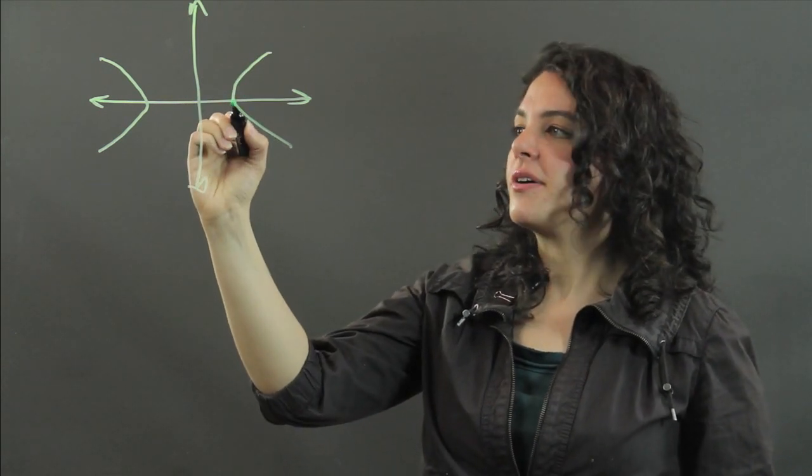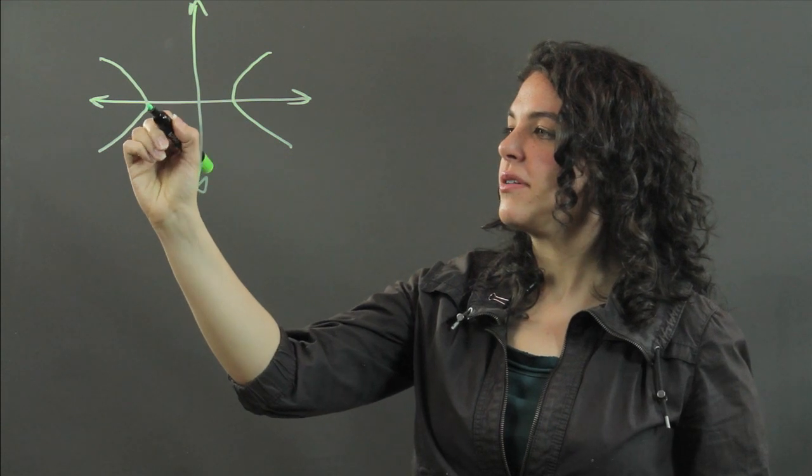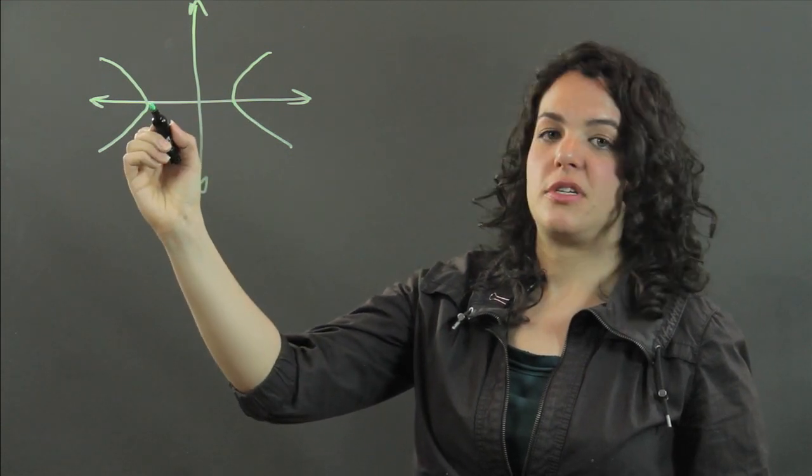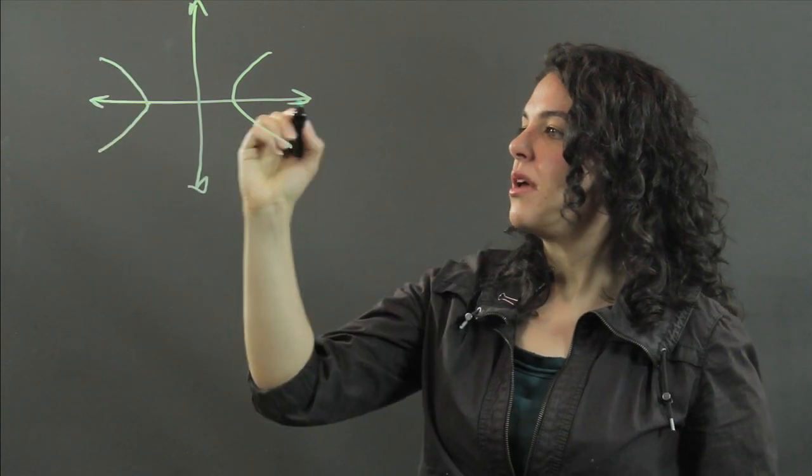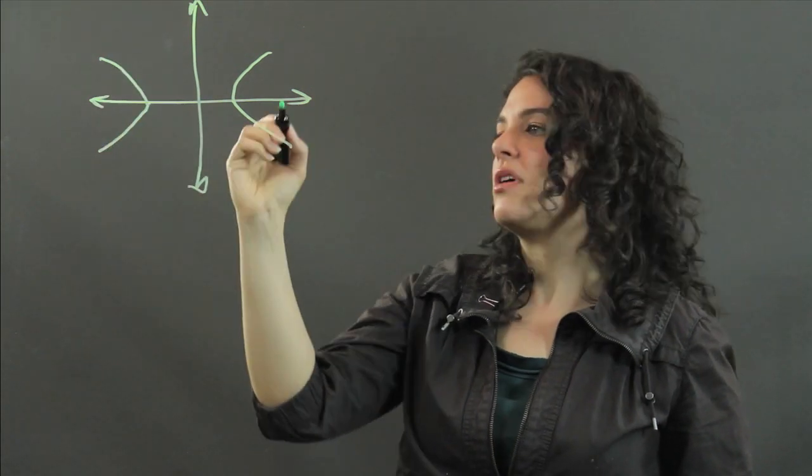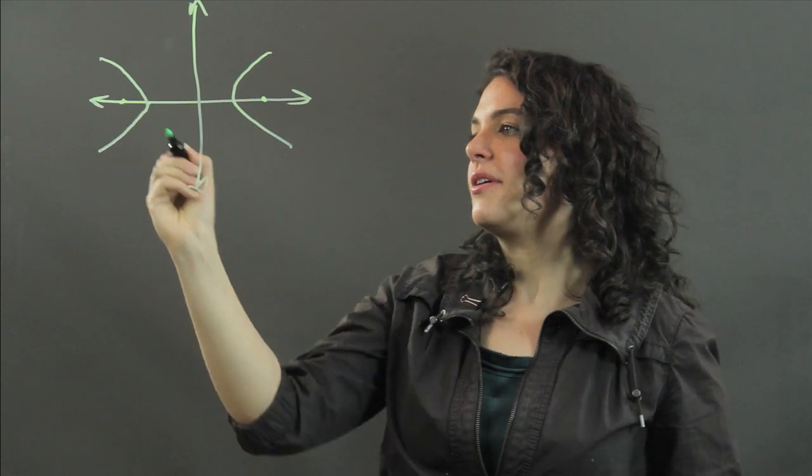And this point here and this point here, these are the two vertices. The parabola is intersecting this line, which has the foci. The foci are usually around here and here.